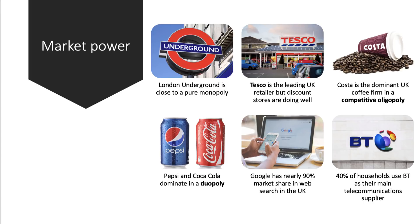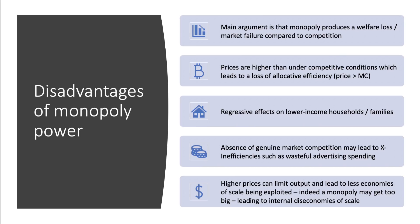Pepsi and Coca-Cola in the can drinks market essentially dominate a duopoly. Google is a near-pure monopoly with nearly 90% of web search, particularly through mobile. In the telecoms market, BT has a dominant market position with more than 40% of the market. So let's go through the key disadvantages of monopoly.